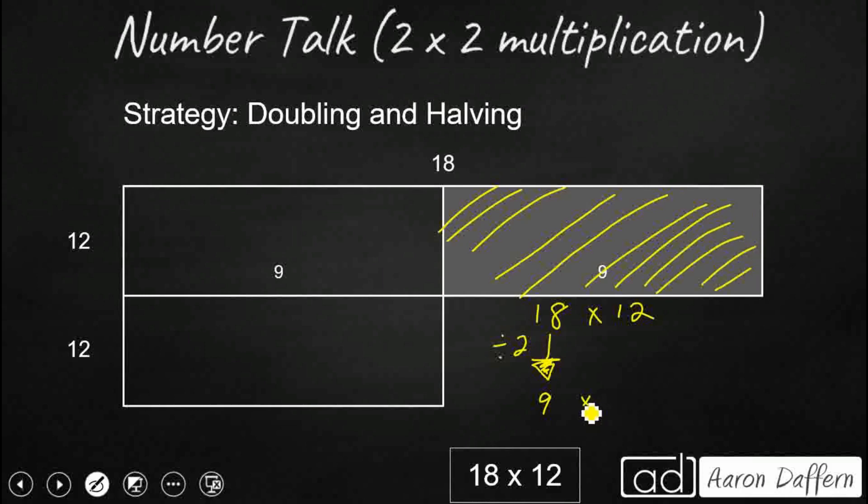Now, in order to keep a balanced expression, what we need to do is we need to take the other factor. Since the 18 was cut in half, we need to take our other factor and double it. So we double one. We halve the other. And so now, instead of 18 times 12, we have 9 times 24, which is going to get us the same thing. And 9 times 4 is 36. 9 times 20 is 180. And so 36 and 180 gets us back to our 216.